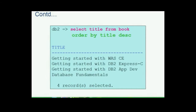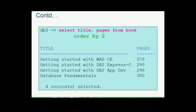Notice the order of the first three records. The first three words 'Getting Started With' remain the same — the sorting starts from the point where the characters are different. There is another way of specifying which columns need to be sorted. In this example, SELECT title, pages FROM book ORDER BY 2 — the number 2 indicates the column sequence number in the query for the sorting order. Column pages takes the second place in the column list, hence number 2 is used for the sort order.